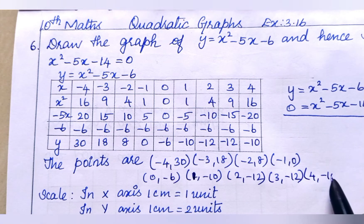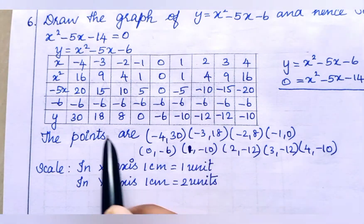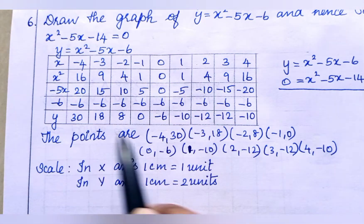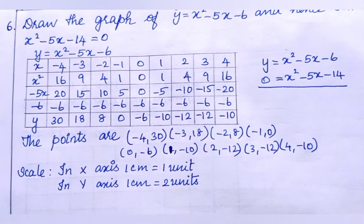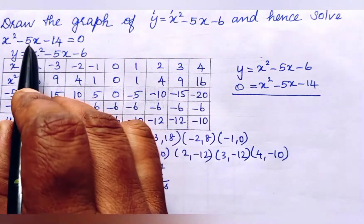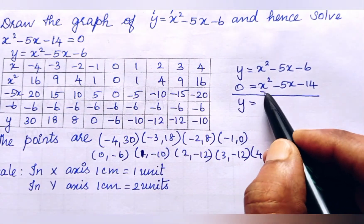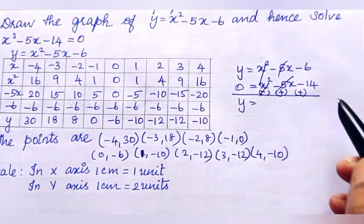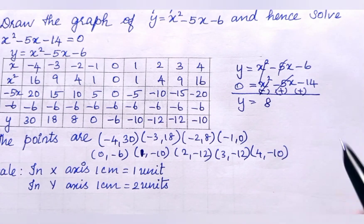For the x axis, take 1 cm equals 1 unit scale. For y values, minimum is minus 10 and maximum is around 30, so take 2 units per cm for the y axis. Now from the equation, to find what we need to plot, we subtract — putting y equal to 0 in the modified equation gives us y equals 8 as the line to draw.